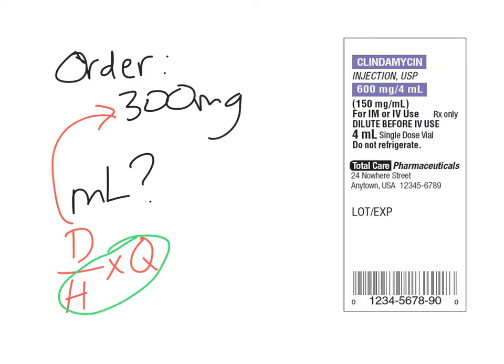The reason why it's two things — H and Q — is that the dose on hand is the amount of medication per a particular quantity. In a tablet medication, it's so much medication per tablet. In a liquid medication like clindamycin that we're looking at here, it's per so many milliliters.